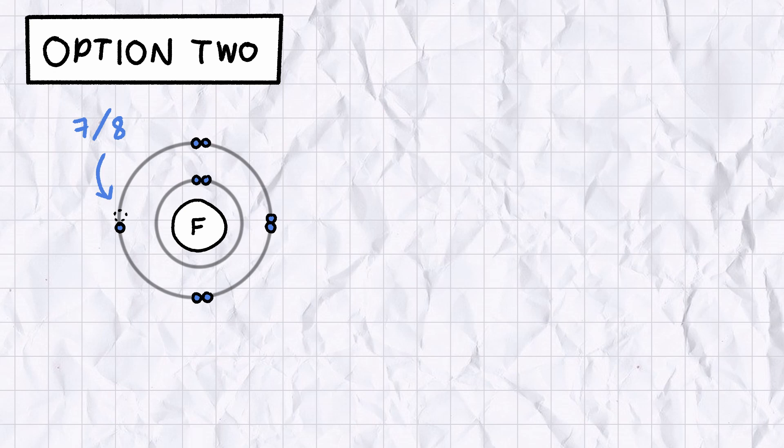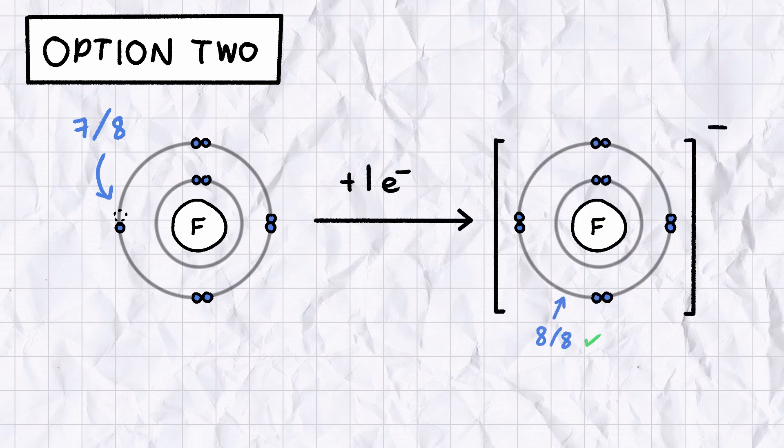Option two: atoms like fluorine that nearly have completed shells can accept extra electrons from other atoms to fill it up completely, a process called reduction.